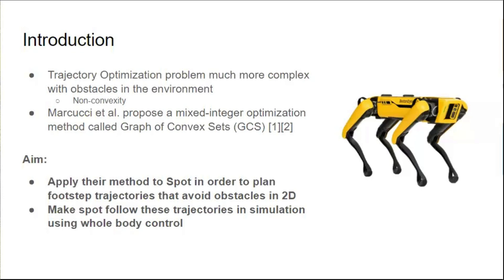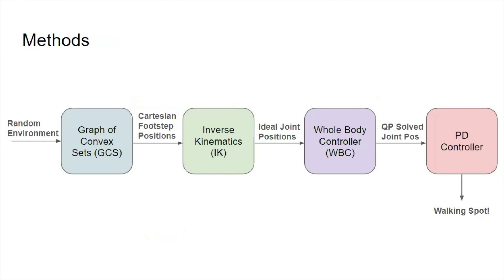Additionally, we want to make Spot follow trajectories in simulation using whole-body control. Here is an overview of the subcomponents of our project. We input a random environment with varying terrain into the Graph of Convex Sets algorithm to get Cartesian footstep positions for the trajectory. We then convert the Cartesian positions into joint positions with IK. We use the whole-body controller to solve a quadratic program that finds feasible joint positions based on the ideal ones from IK. The new joint positions are given to the PD controller that tries to command them to Spot.